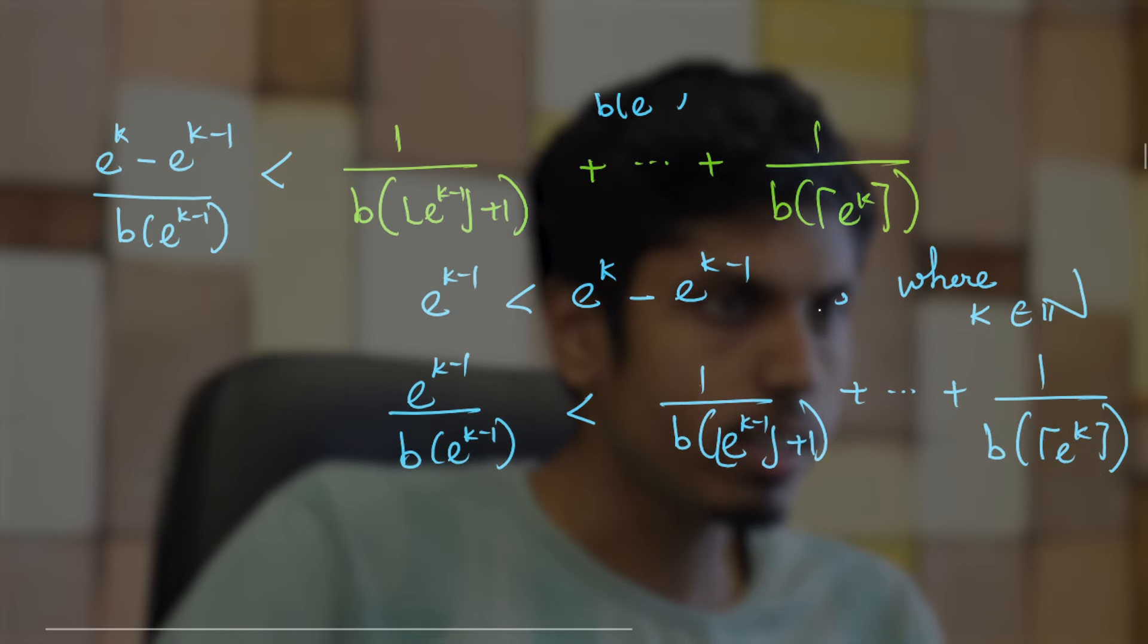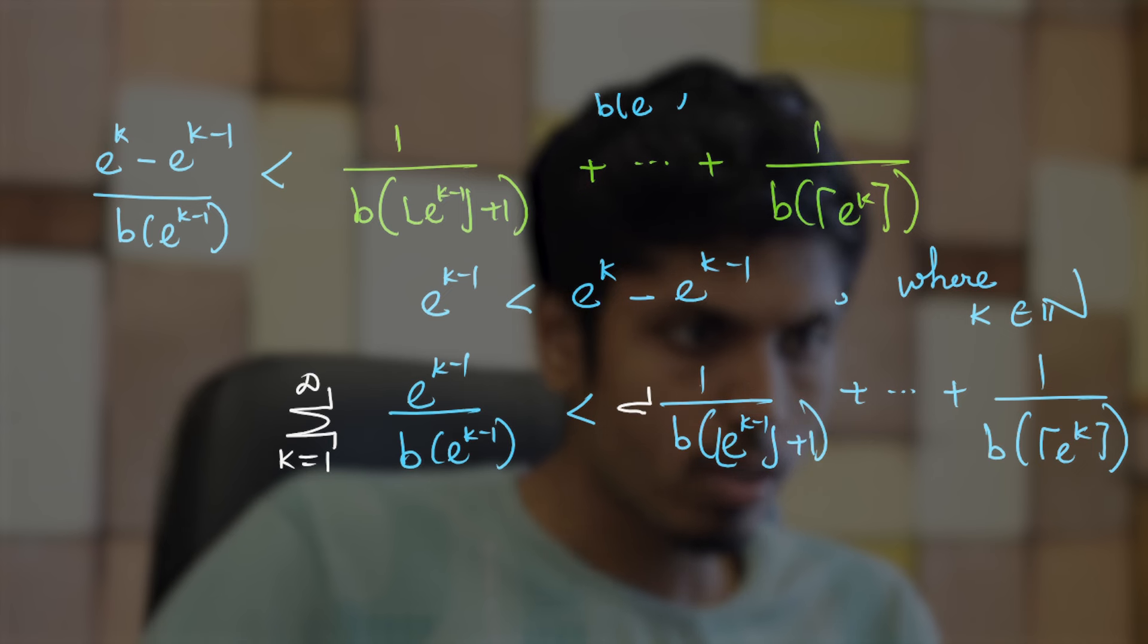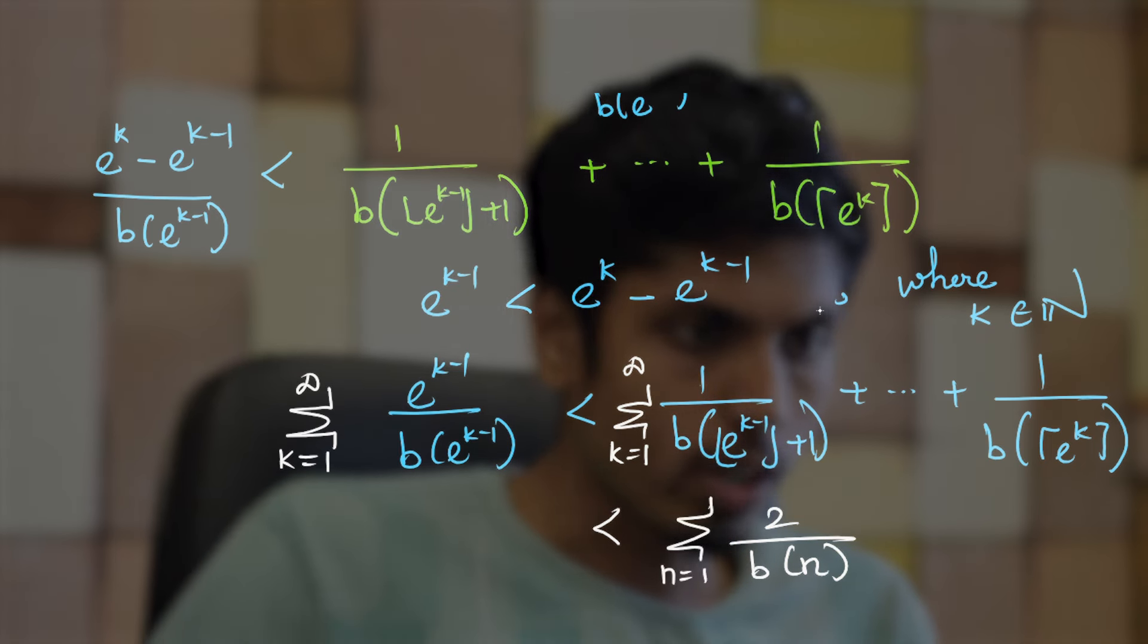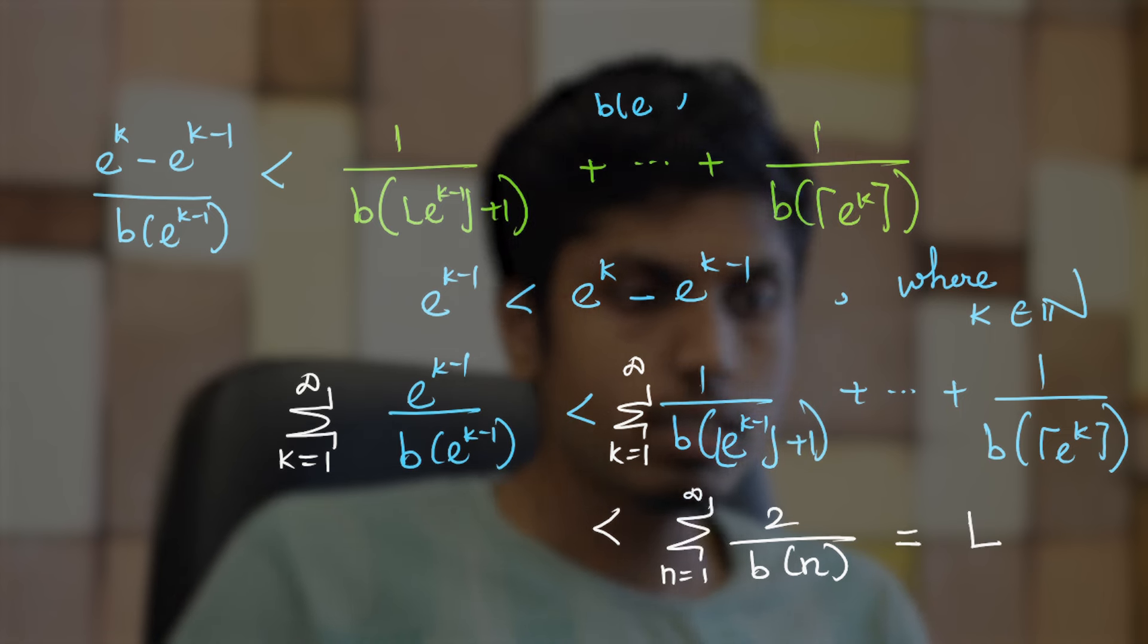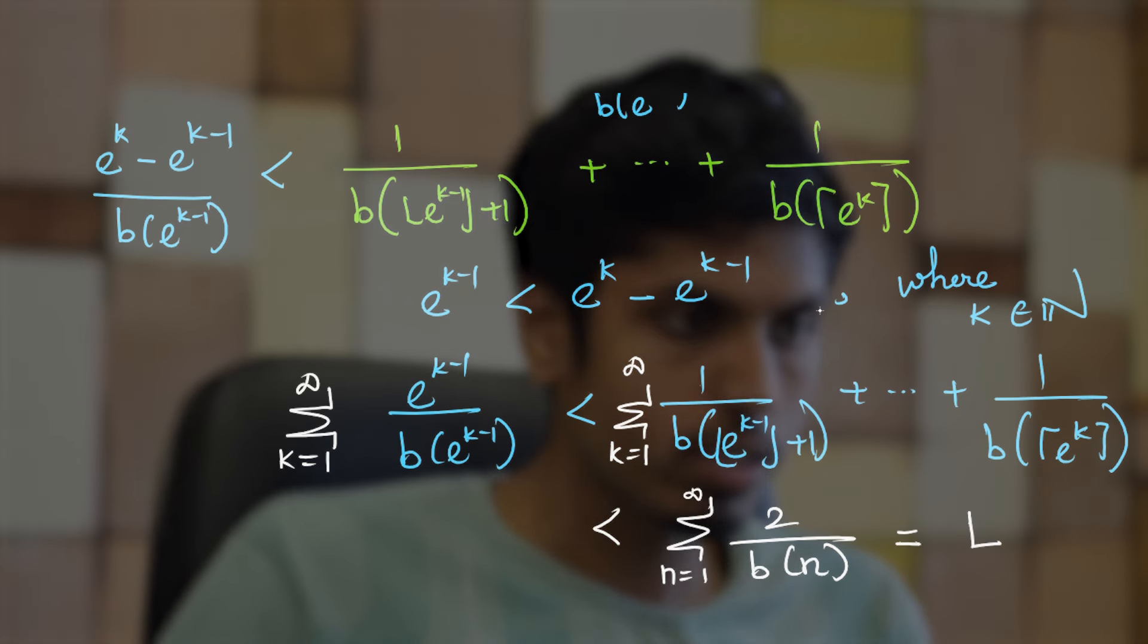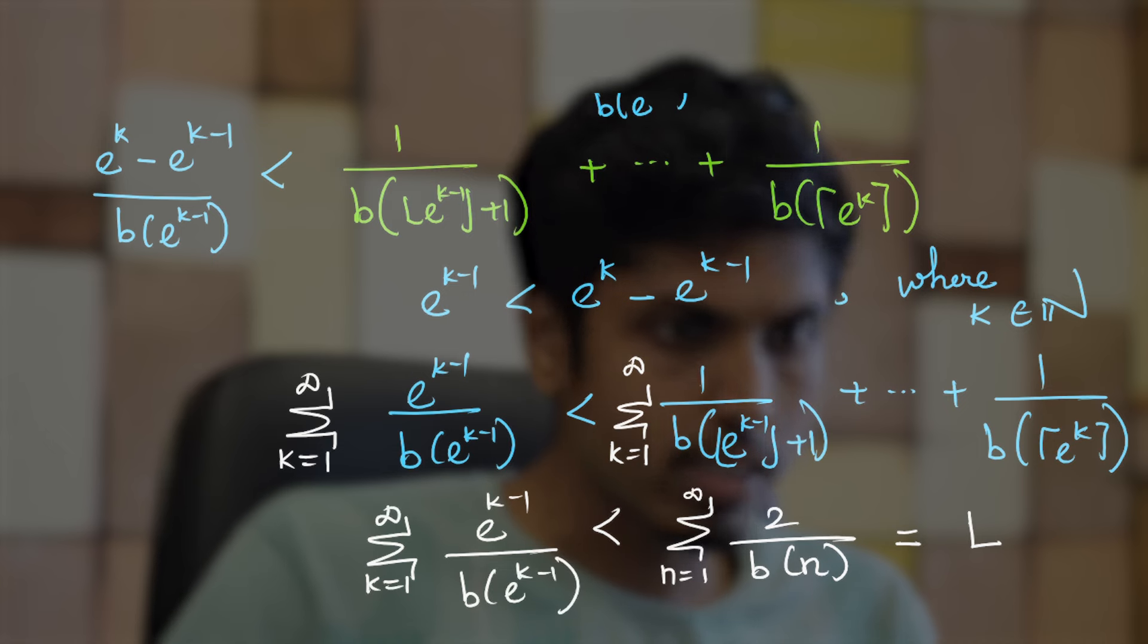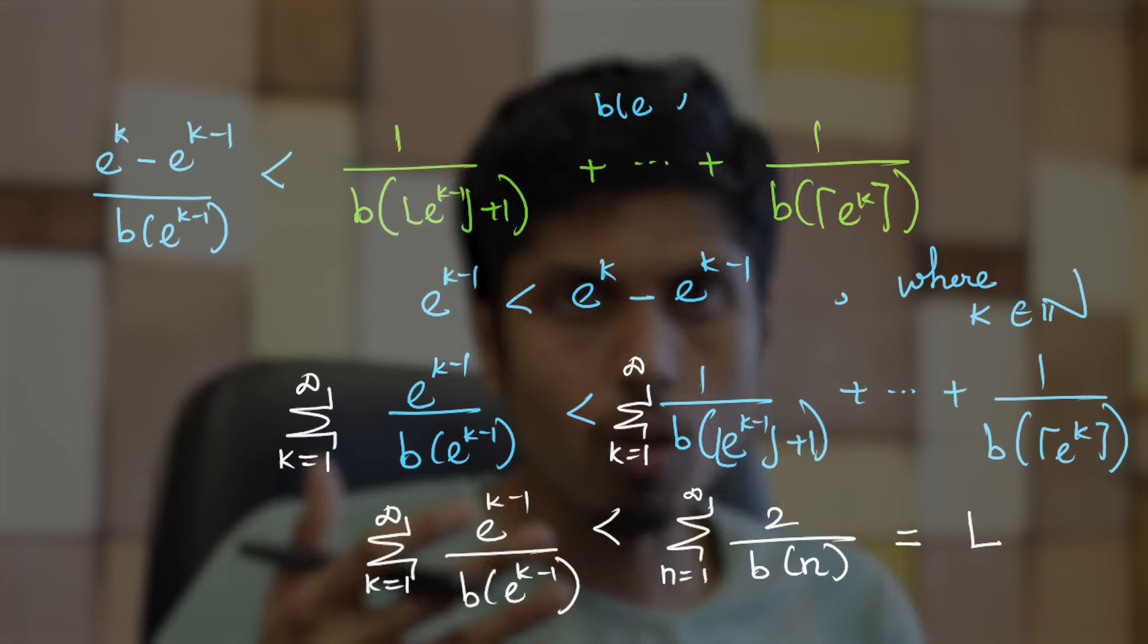Now, when the summation is taken from k equal to 1 to infinity on both sides, you will see that the RHS is at most summation 2/b(n). This is because every integer is repeated at most twice where n goes from 1 to infinity and we know that is a finite value L because it converges. Thus we see that summation k equal to 1 to infinity (e^(k-1))/b(e^(k-1)) is less than L which means it will also converge.